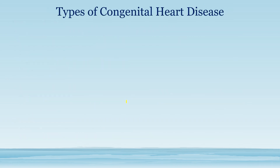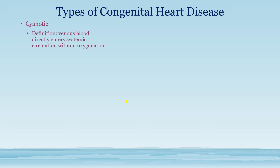Now let's talk about the types of congenital heart disease. We've covered where they come from; now let's discuss what they are. Starting with cyanotic conditions — these are more severe, more classic, and more high-yield.